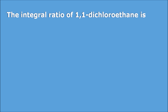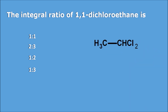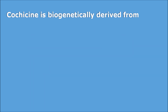Now a logical question from analysis: the integral ratio of 1,1-dichloroethane. Options are 1:1, 2:3, 1:2, and 1:3. Looking at the structure of 1,1-dichloroethane, it has two types of protons indicated as 'a' and 'b'. The relative number of protons a and b are in the ratio of 1:3. This ratio is called the integral ratio, so the right answer is 1:3. This is a logical question — if you know the concept, you can apply the logic and get the right answer.